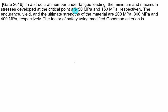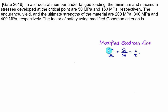In a structural member under fatigue loading, the minimum and maximum stresses at the critical point are sigma minimum equal to 50 MPa and sigma maximum equal to 150 MPa, both positive. The endurance, yield, and ultimate values are 200, 300, and 400 MPa respectively. This time we have to use the Goodman criteria. According to Goodman, mean stress divided by SUT plus amplitude stress divided by endurance strength equals 1 upon factor of safety.